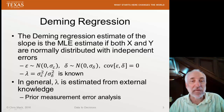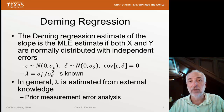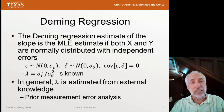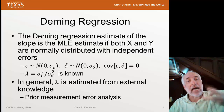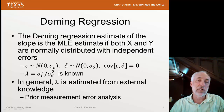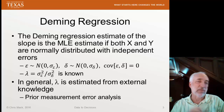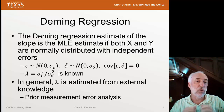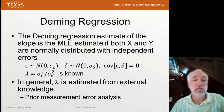In general, we have to estimate lambda from external knowledge — we can't use the data itself to determine what lambda is. Also, in some references lambda is defined as the opposite ratio: x measurement variance divided by y measurement variance instead of the way presented here. There is no universally established standard, so whenever you read a book or paper on Deming regression, make sure you check how they have defined lambda.